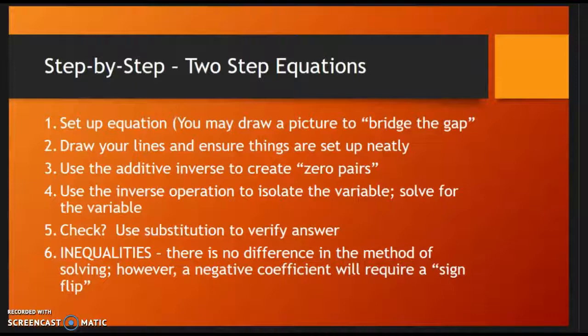Now, what if I am unsure if my answer is correct — what if I didn't put the right sign? What I'm going to do is use substitution to verify my answer. This next rule is specifically for inequalities. There's not going to be a real difference in the method of solving; however, a negative coefficient will require a sign flip. With inequalities, when you are dividing or multiplying by a negative coefficient, you need to flip the sign — I'll get more into that once we get to the examples.